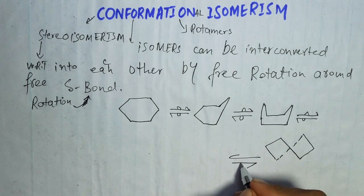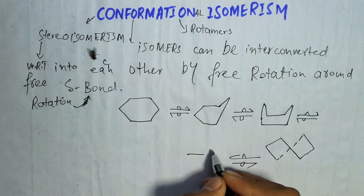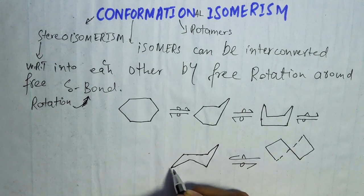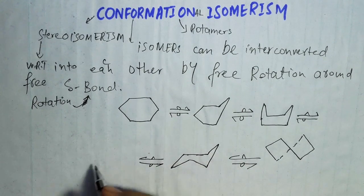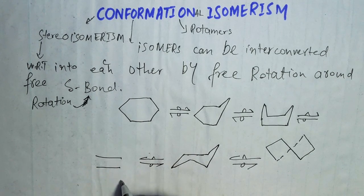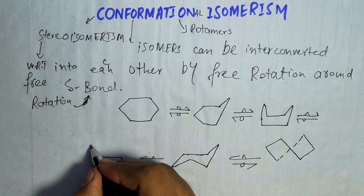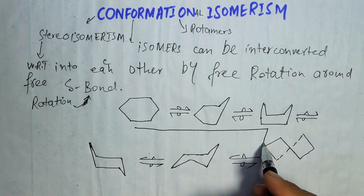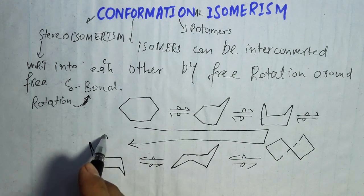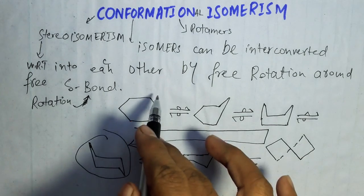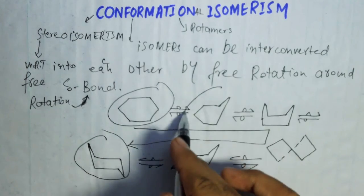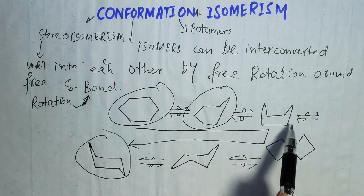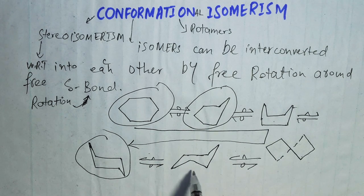I again flip this molecule and we get a chair conformation of cyclohexane. I again flip this molecule and we get another conformation of cyclohexane — there is also a chair conformation. So we are moving from least stable to most stable conformation. The chair conformation is the most stable conformation, while the boat and twist-boat conformations are the least stable.